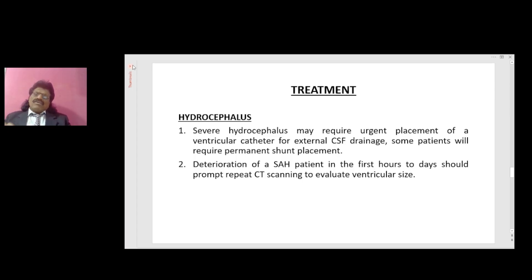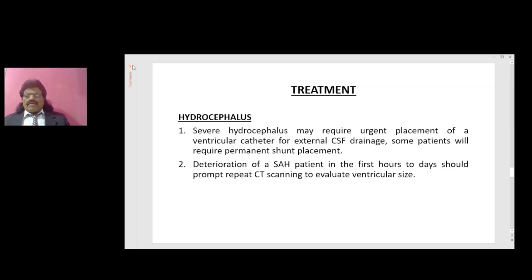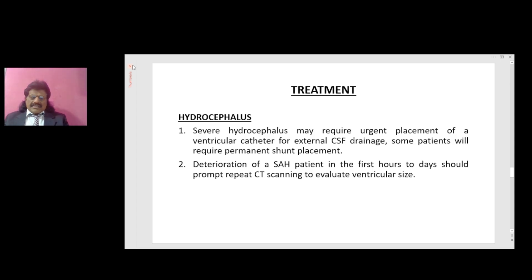Hydrocephalus: severe hydrocephalus may require urgent placement of a ventricular catheter for external CSF drainage. Some patients will require permanent shunt placement. Deterioration of a subarachnoid hemorrhage patient in the first hours to days should prompt repeat CT scanning to evaluate ventricular size.